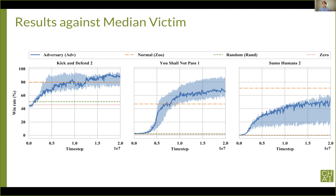It's perhaps not surprising that we're able to beat a fixed opponent we can train against — it's helpless, it can't respond to what we're doing. What's important is the way in which the adversarial policies learn to beat their opponents. They don't learn to perform their intended tasks really well, like blocking the goal, but instead learn to exploit certain weaknesses in the victim's policy.